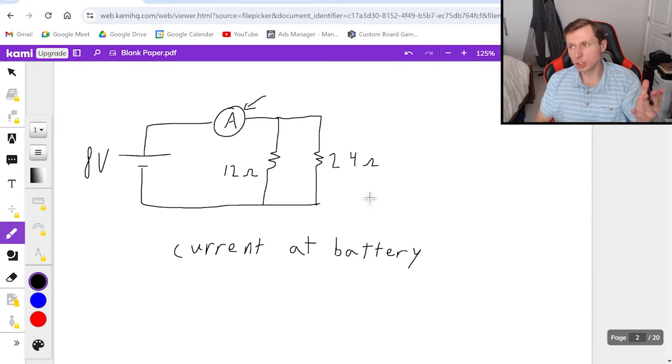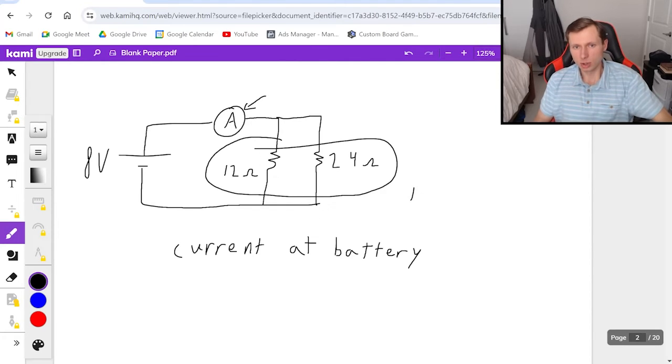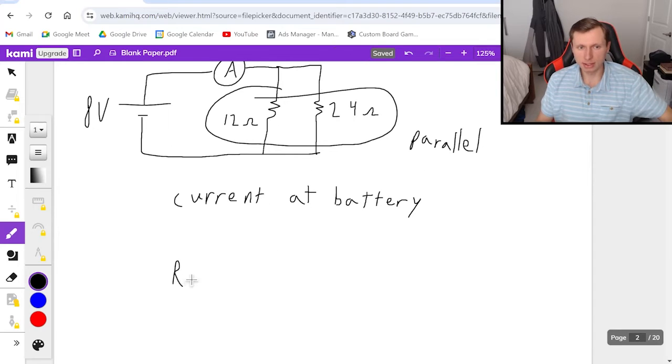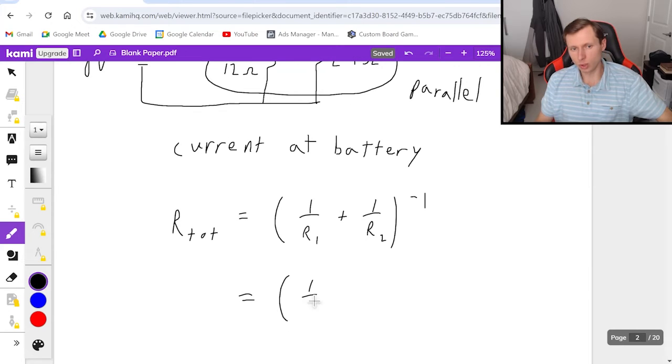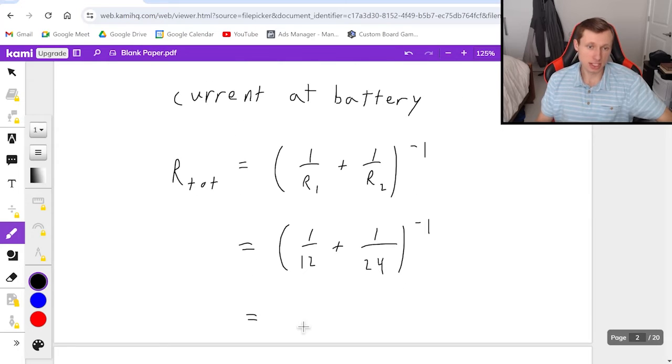So what I'm going to do is if I want to find the current as fast as possible, the first thing I would do is combine these two resistors who are in parallel. And the way we add resistors in parallel is R total equals (one over R1 plus one over R2) to the negative first power. And so that means it's one over 12 plus one over 24 to the negative first power. You plug this in a calculator and you will get eight ohms.